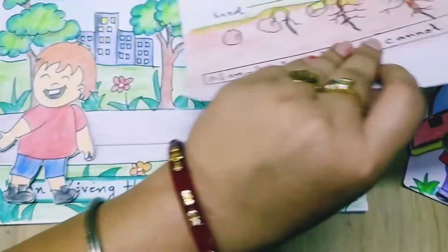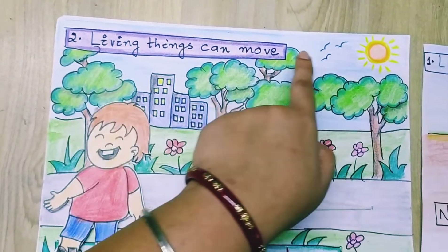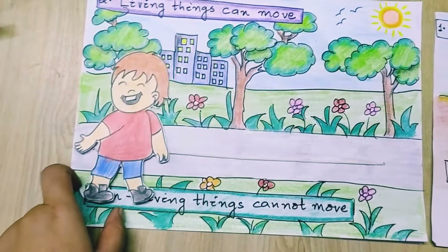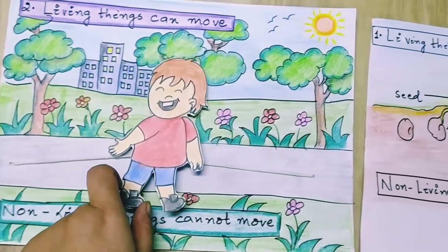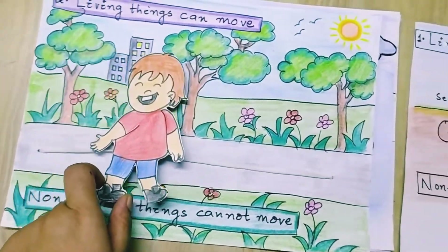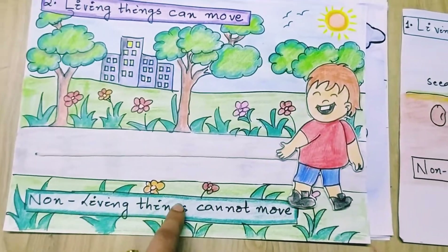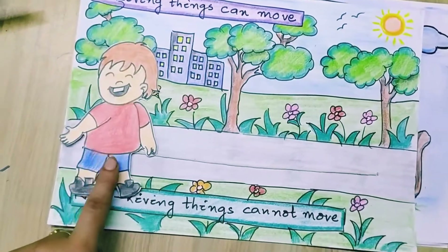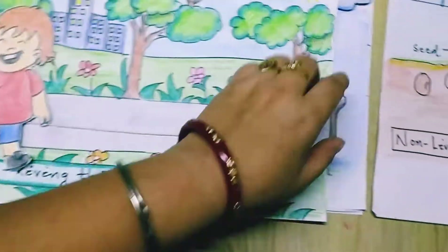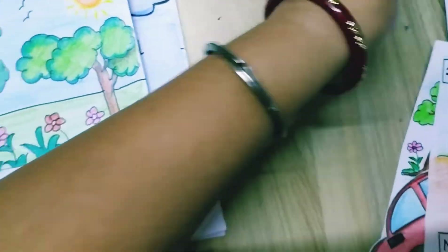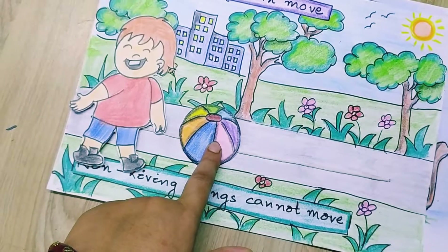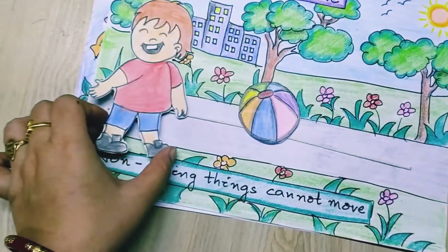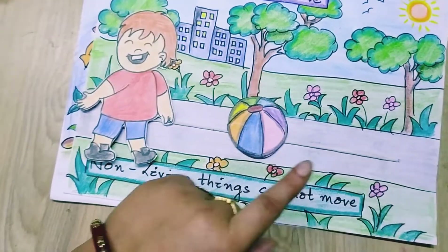Living things can move. Here one boy is standing in the park — can this boy move? Yes! Living things can move on their own. Non-living things cannot move. See, this is a ball. Can this ball move? No — unless someone pushes it, it cannot move. So living things can move and non-living things cannot.